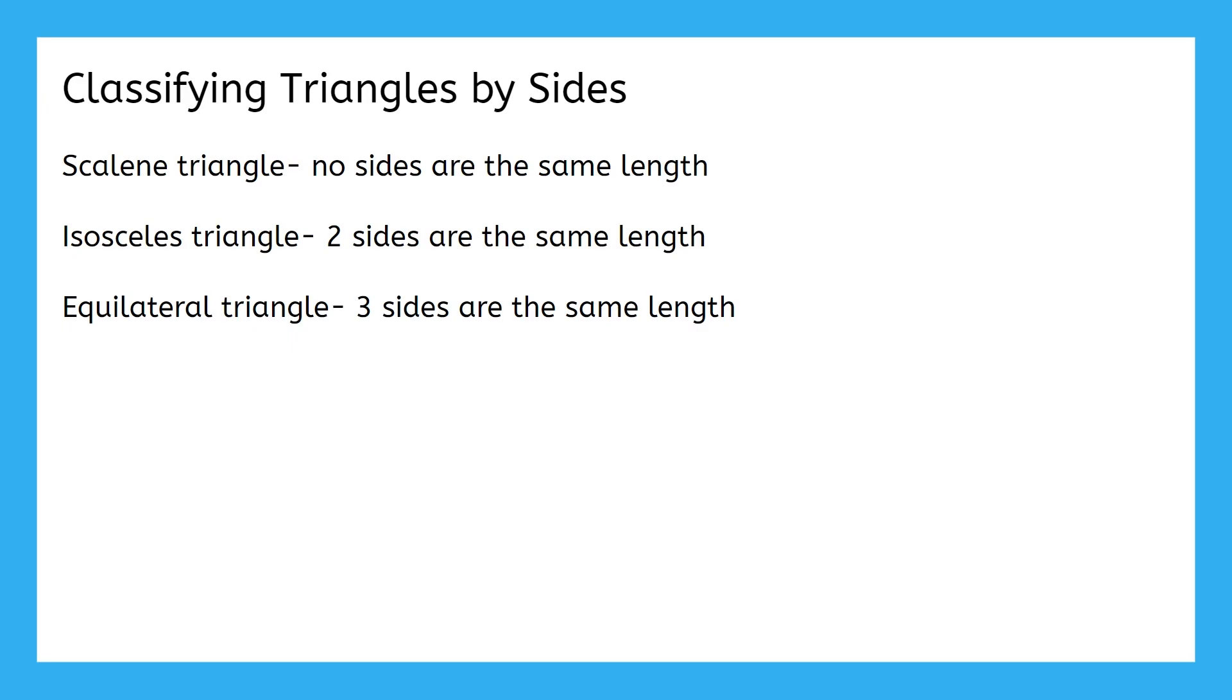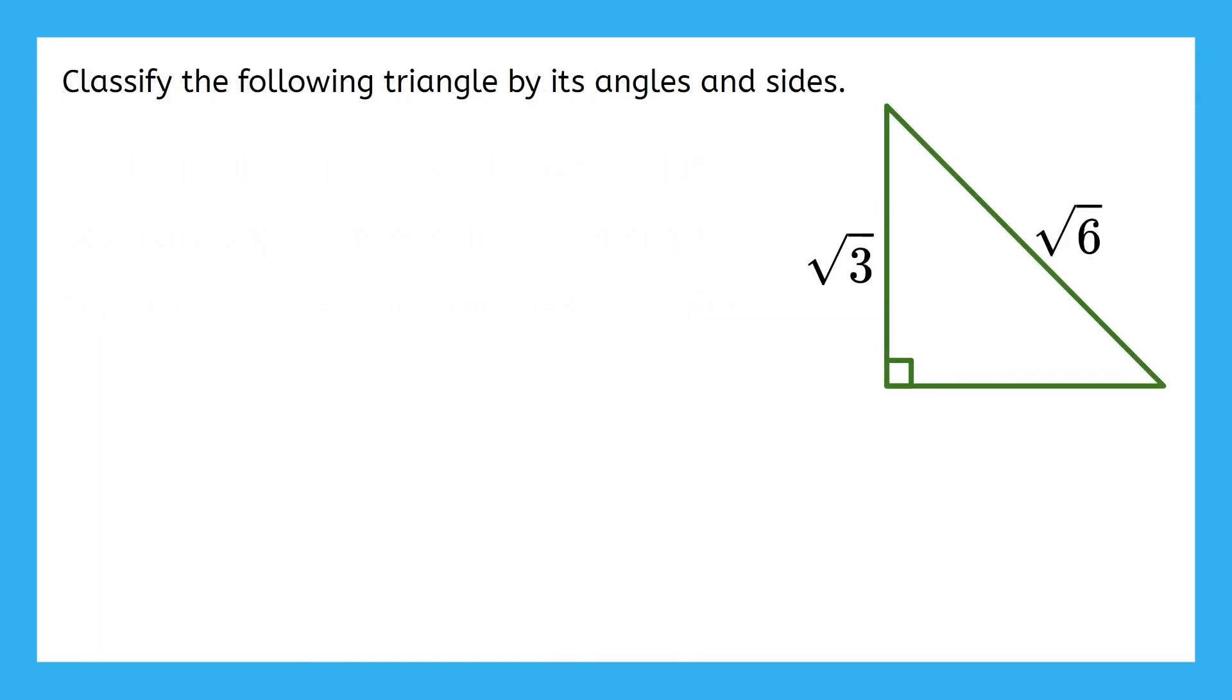These are the three ways we can classify triangles based on their sides. We're going to try a practice problem next, so pause the video now if you need any more time to go over this information. Our first example asks us to classify the triangle by its angles and sides. Can you start by classifying this based on its angles?